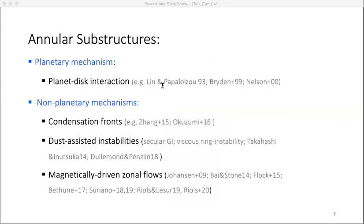There is extensive literature on the mechanisms to explain the ring-like substructures. They can generally be divided into two categories depending on whether there's a planet embedded in the disk. The most popular explanation is planet-disk interaction, where a sufficiently massive planet can carve a gap in the vicinity of the planet, and the properties of the gap depend on planet mass as well as disk properties. While planet-disk interaction can explain most observations, it remains to understand how planets form in the first place.